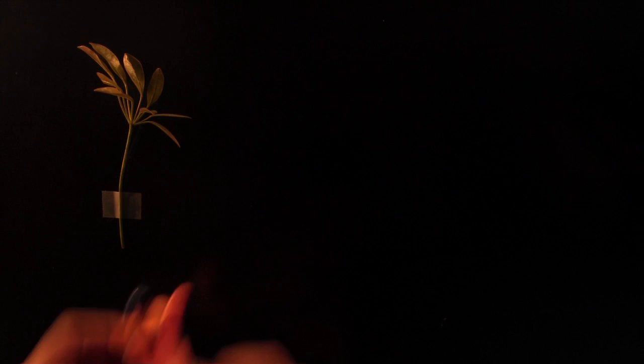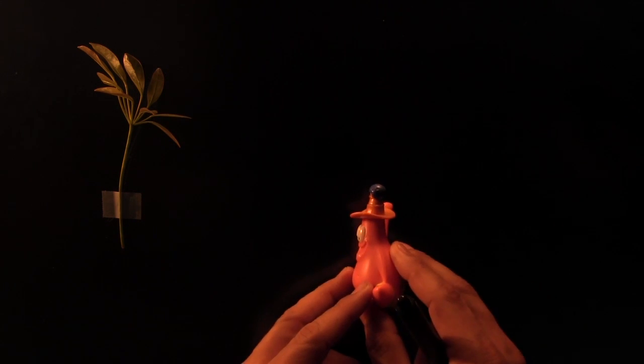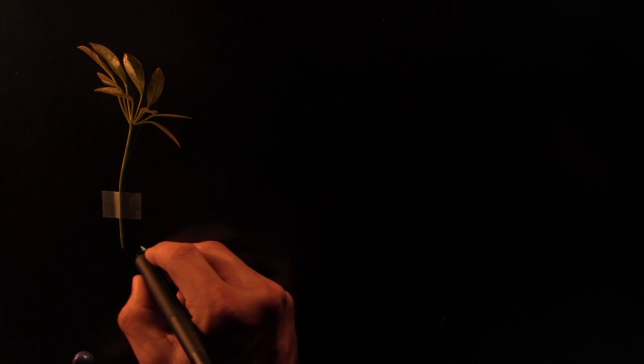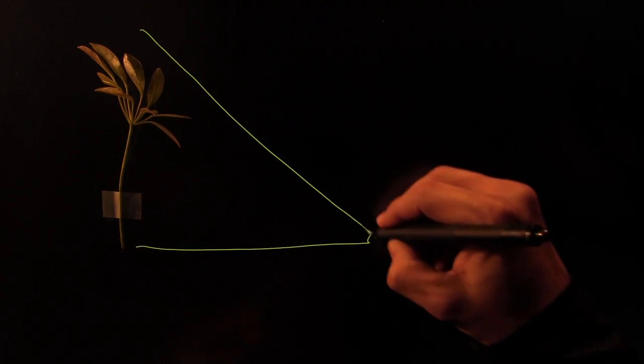So the first thing we do is we position our observer here so that looking up at the tree creates a 45 degree angle. So that would be somewhere around here. And that would be somewhere around there.